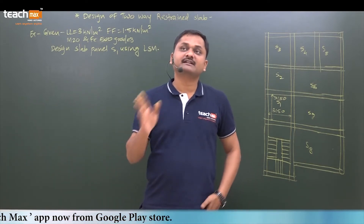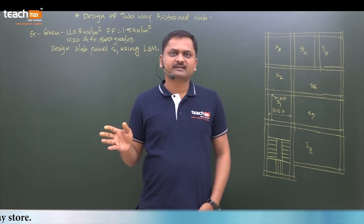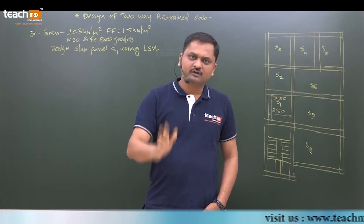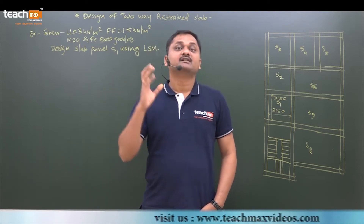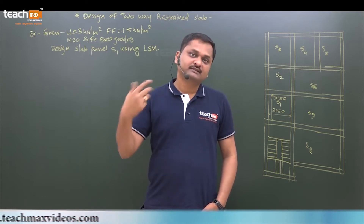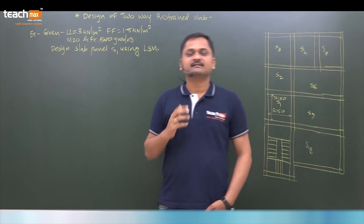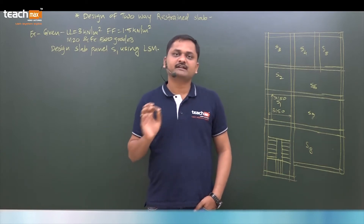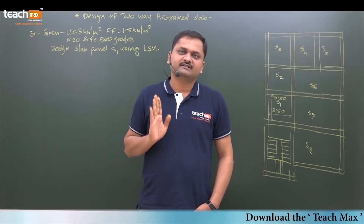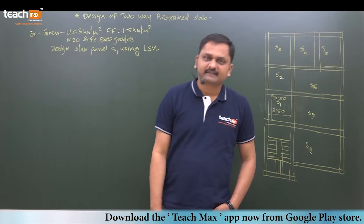In this example, you will understand how to find out the maximum negative moment at the end and positive moment at the mid-span — along the longer span and along the shorter span — and how to provide the reinforcement and design torsional reinforcement. These two examples together are more than enough to understand two-way slabs. Let us concentrate on this example.